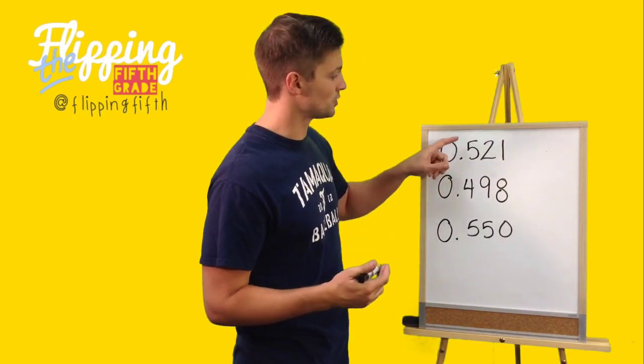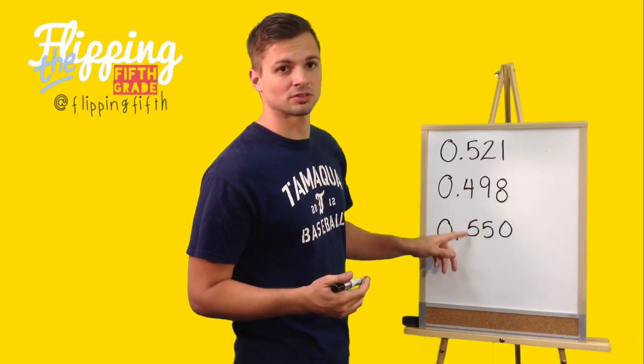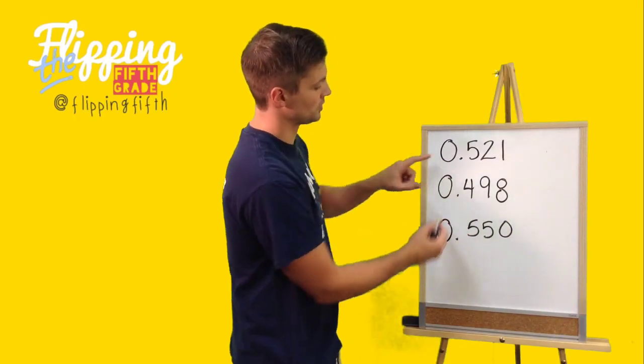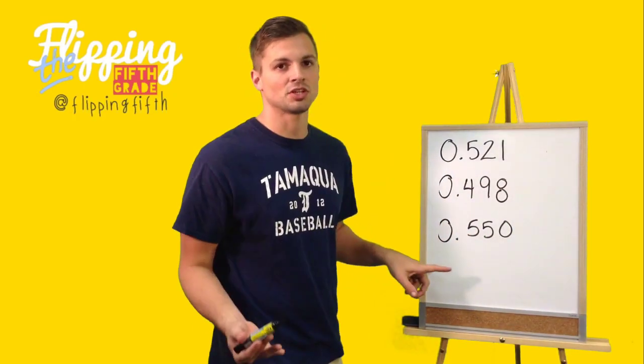One thing you want to do is start from the left, look to the right. Start from the left and work your way to the right. So we notice that these are all zeros, so that doesn't change anything.